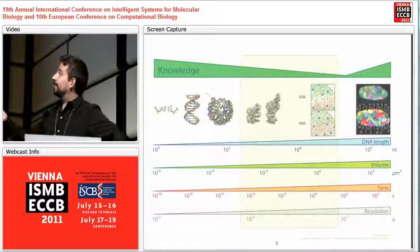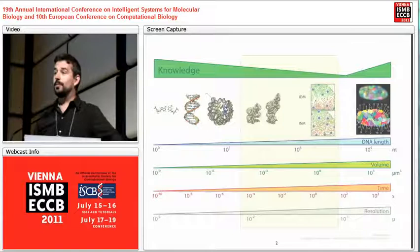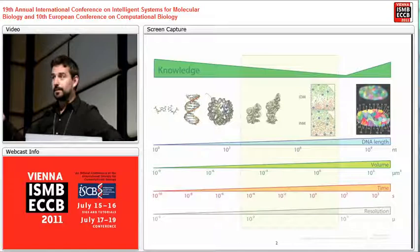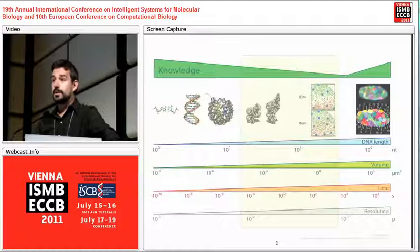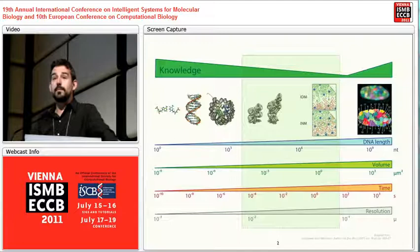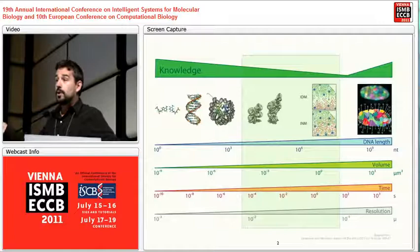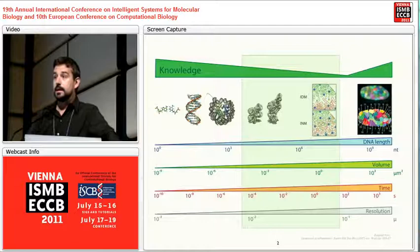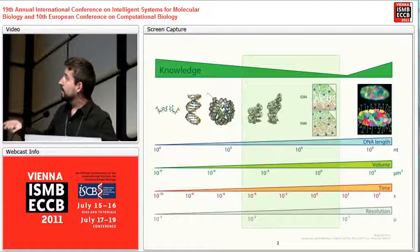This slide is very crucial for understanding what type of things we are looking at. At the high resolution end, as already introduced by Zhang, his visualizer can go from atomic resolution to chromosome territories. At the atomic resolution end, we have a wealth of information through proteins and DNA that have been crystallized or solved by NMR spectroscopy.